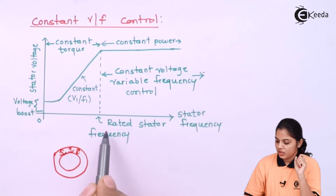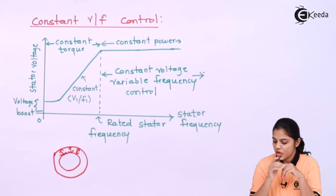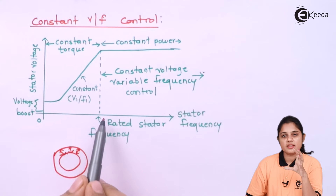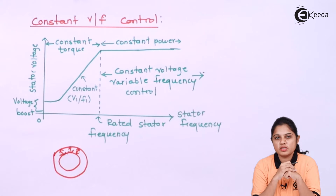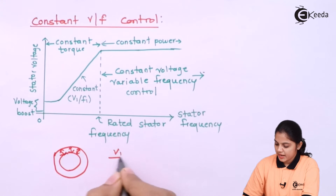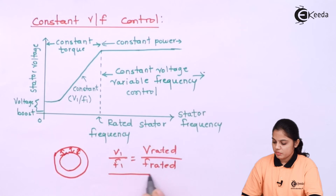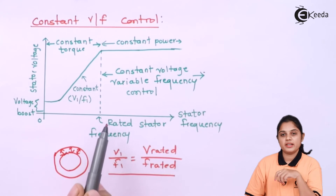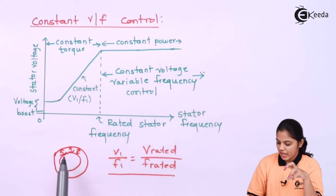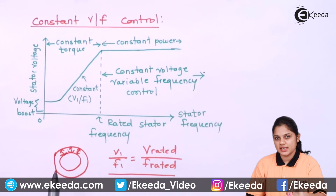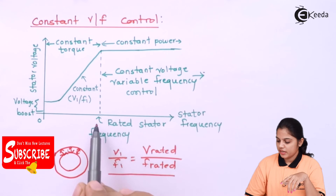This will happen only up to the rated stator frequency — a critical speed value. Beyond this, with constant voltage and variable frequency control, you will achieve constant power. Up to rated stator frequency, V1/F1 equals V-rated over F-rated. After that, the air gap flux between rotor and stator starts decreasing, so torque decreases, but power remains constant.